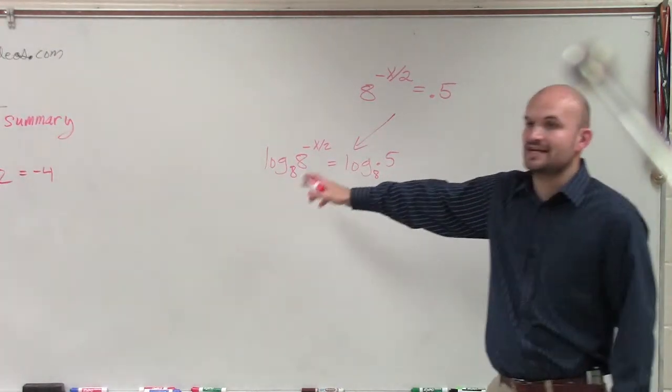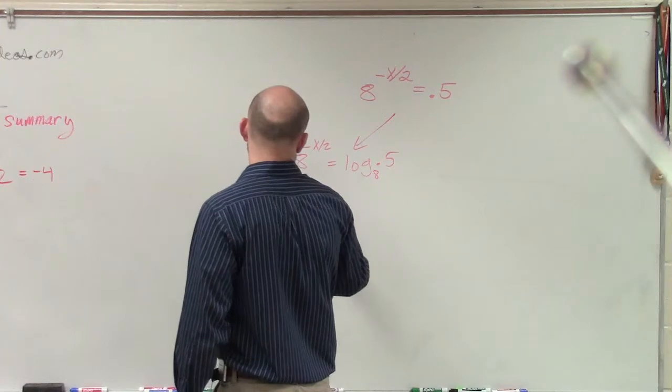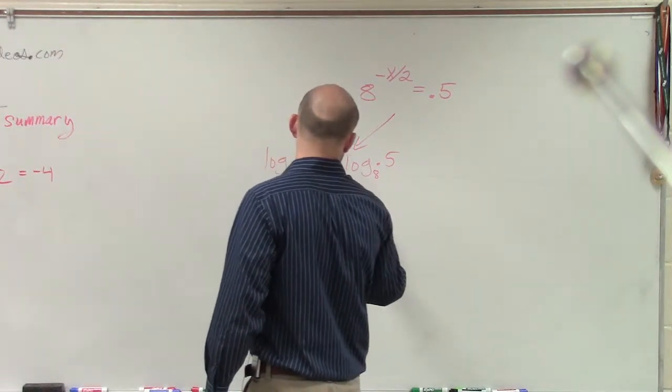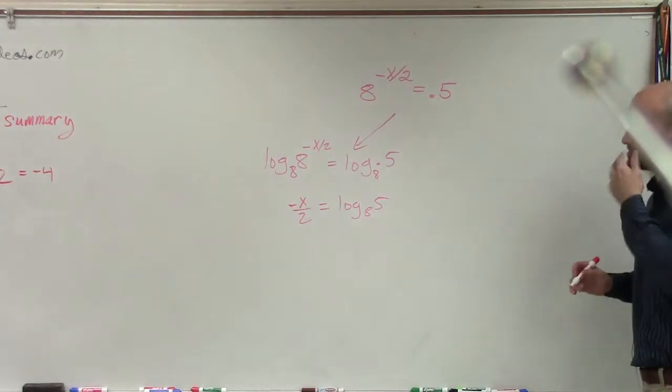Therefore, log base 8 of 8 raised to the negative x divided by 2 is just negative x divided by 2 equals log base 8 of 5. Justin, could you go and find a seat over there, please? Thank you.